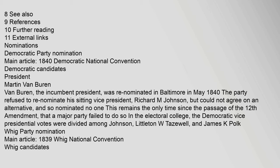Democratic Party nomination: Democratic candidate President Martin Van Buren, the incumbent president, was re-nominated in Baltimore in May 1840. The party refused to re-nominate his sitting vice president, Richard M. Johnson, but could not agree on an alternative, and so nominated no one. This remains the only time since the passage of the Twelfth Amendment that a major party failed to do so. In the Electoral College, the Democratic vice presidential votes were divided among Johnson, Littleton W. Tazewell, and James K. Polk.